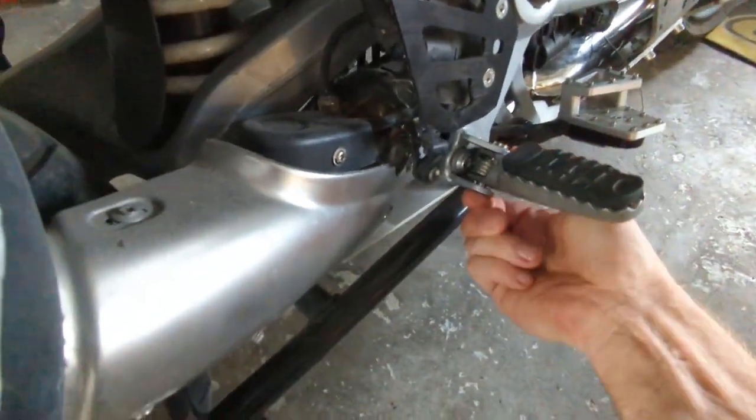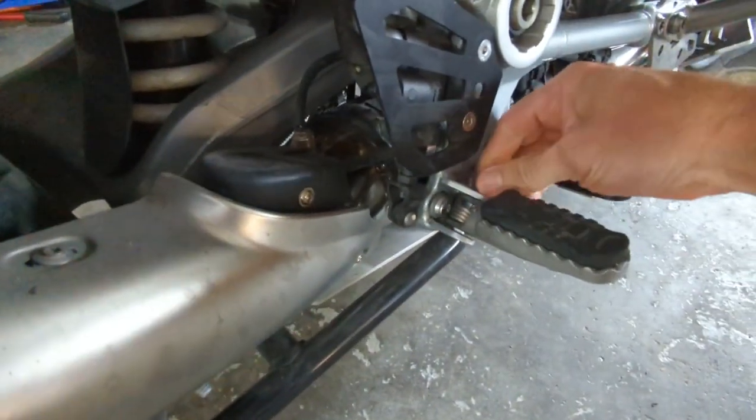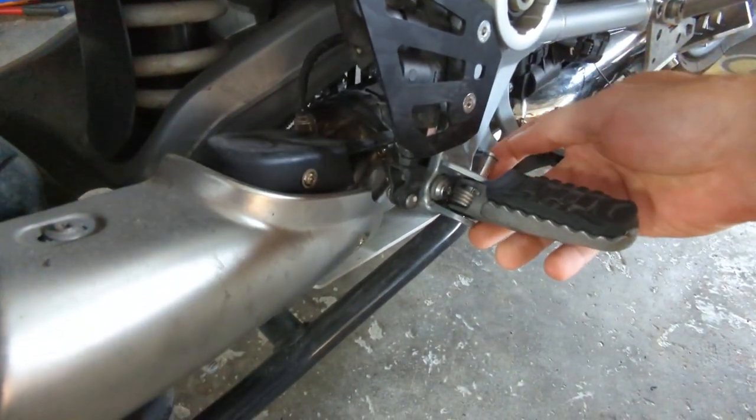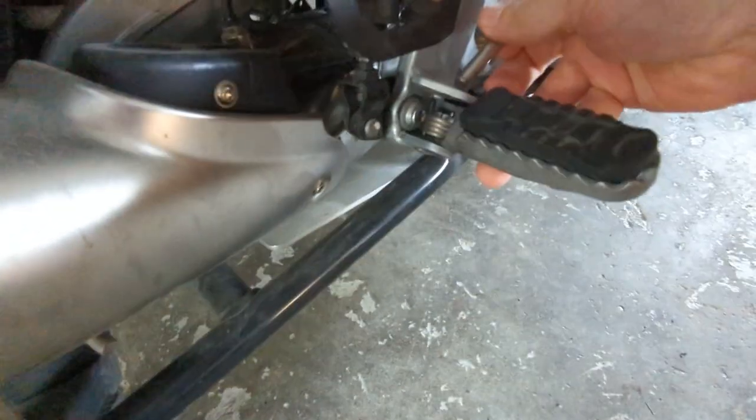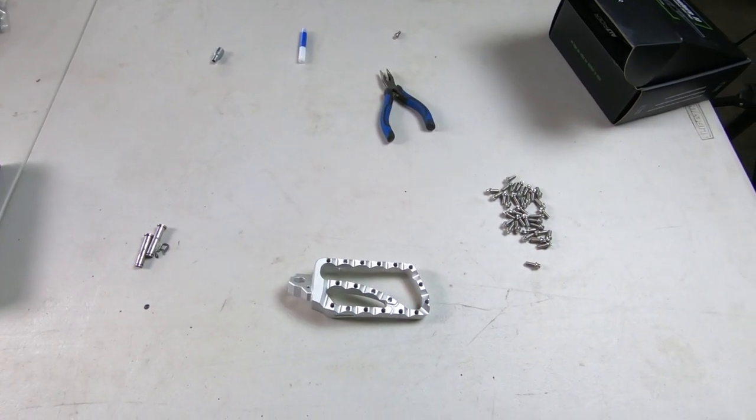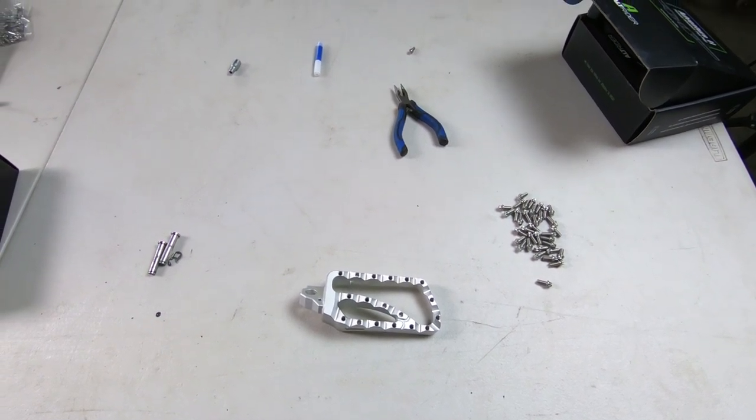Once you've got the e-clip off, you can push the foot peg pin out. It really comes off pretty easily. You will be reusing this foot peg pin and the e-clip. Go ahead and get both sides of your foot pegs off. Be sure to save both foot peg pins and both e-clips.